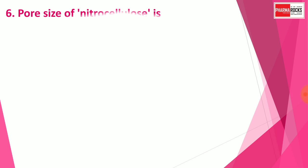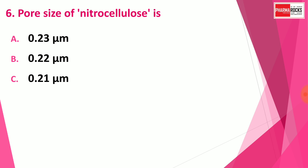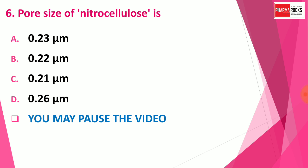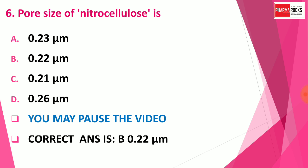Question number 6. Pore size of Nitrocellulose is — Option A: 0.23 micrometer, Option B: 0.22 micrometer, Option C: 0.21 micrometer, and Option D: 0.26 micrometer. You may pause the video to think about the correct answer. The correct answer is Option B, 0.22 micrometer. The pore size of nitrocellulose is 0.22 micrometer, used in sterilization.